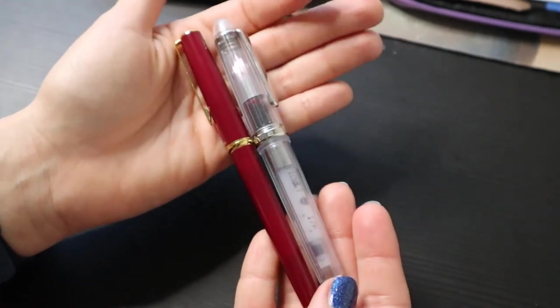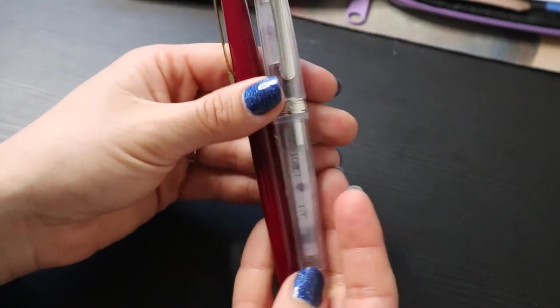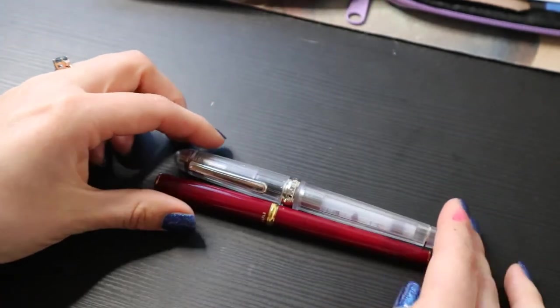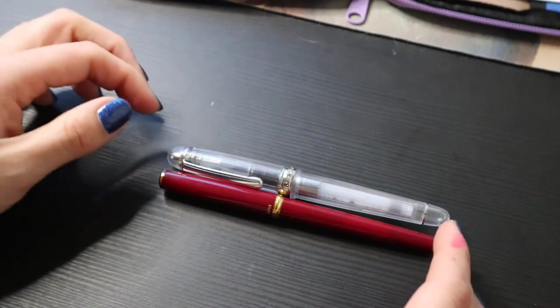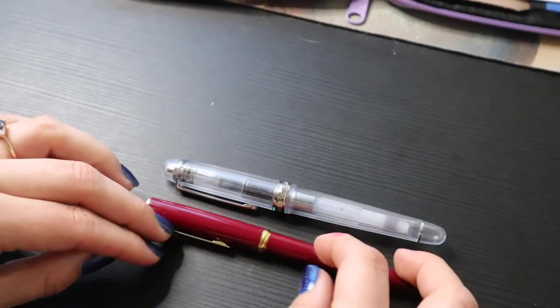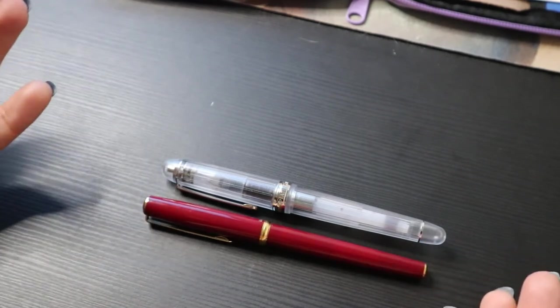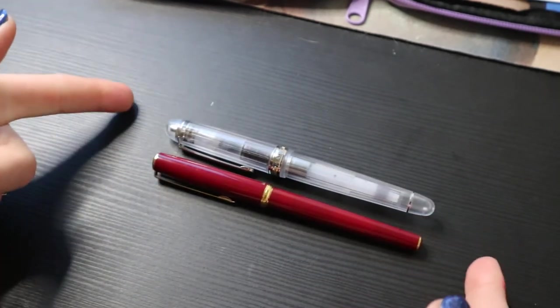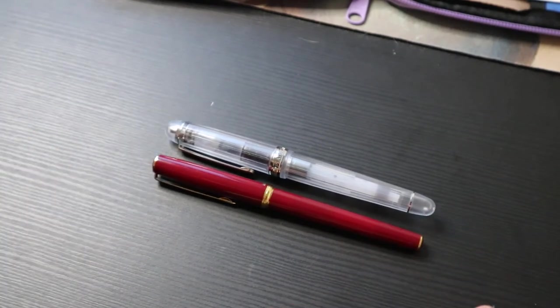They're different shapes. The PTL is what I'm just going to call it. It's much slimmer. Lengthwise they're about the same, but I think you can see that the 3776 has a much more luxurious look to it. Of course, this is a flat top. This is a cigar shape.